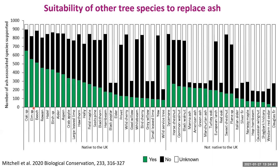In terms of supporting our ash-associated biodiversity, oak, elm and beech are the top three native species. In the case of oak, 650 of the ash-associated species will use it, while about 200 will not. When we look at non-native species, sycamore is seen as the best alternative in terms of the number of species it supports. The other key thing to notice is the large amount of white in the graphs for non-native species, indicating we just don't have the data to make a judgment about the suitability of many of those non-native tree species.